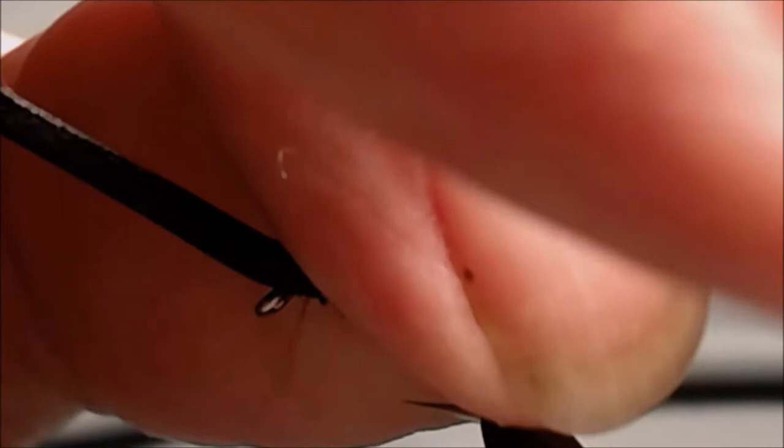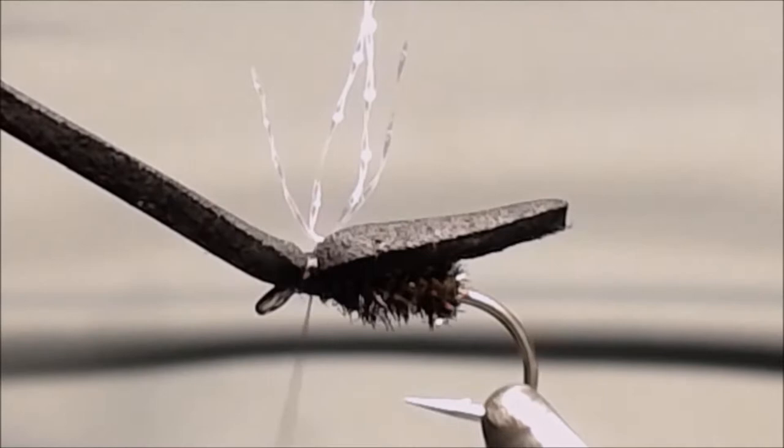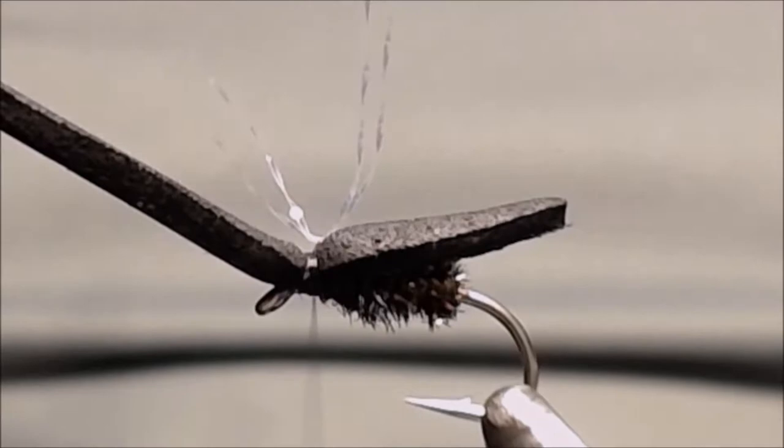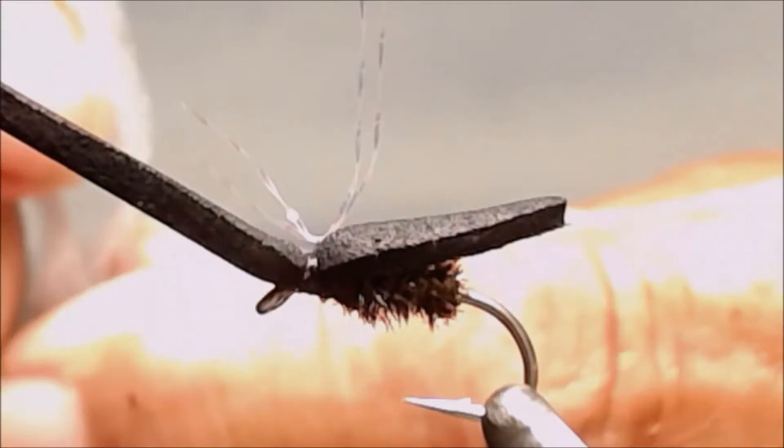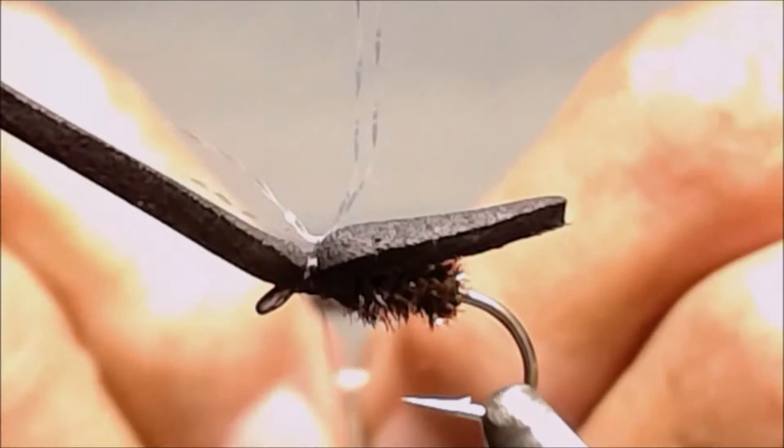For the wing of the cricket, we're going to be using some parachute material. I've got a piece that I'm going to fold in half, and then we'll fold it in half one more time and put it on the fly.